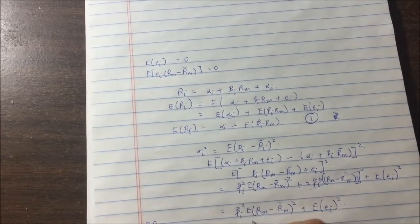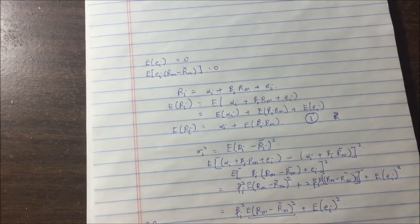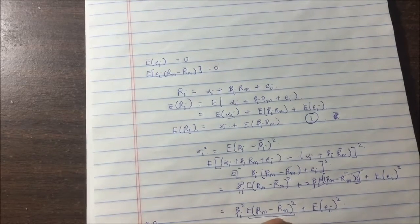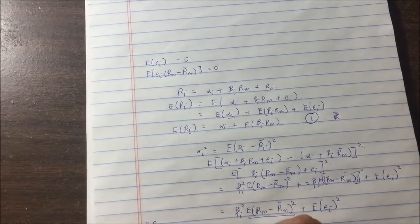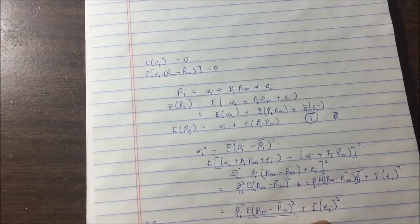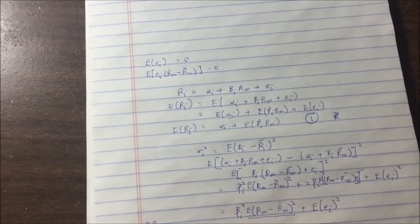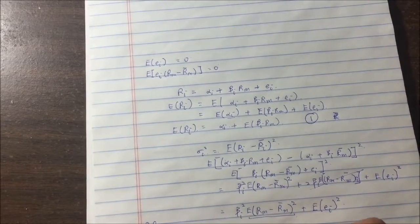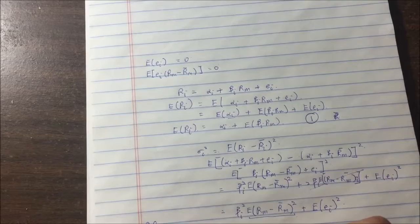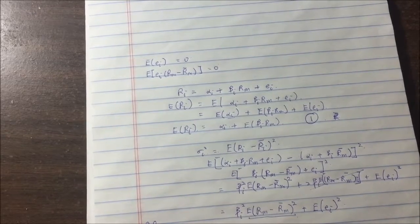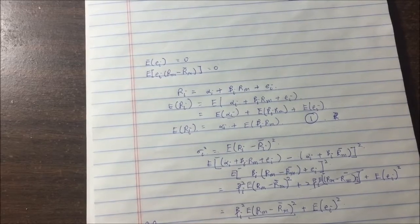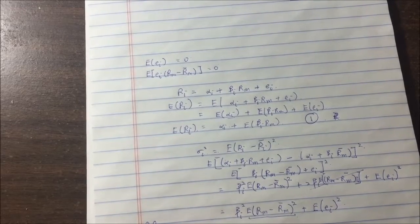So we are left with beta²E[(RM - R̄M)²] plus E[εI²]. So what is this? Basically this is the definition of market variance. So you can write this as beta² times variance of the market plus the idiosyncratic variance.